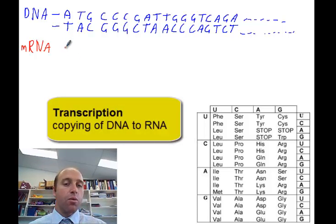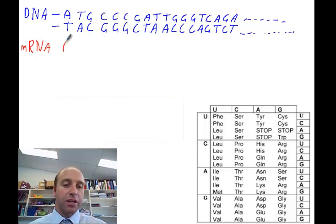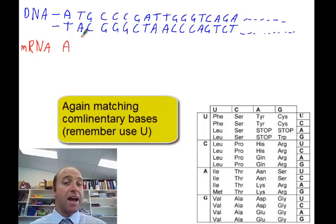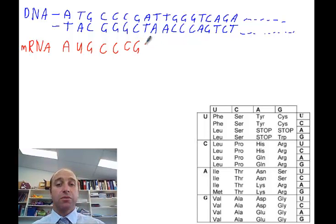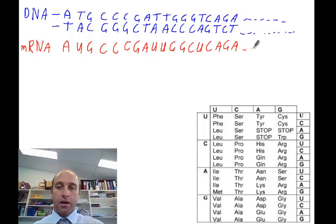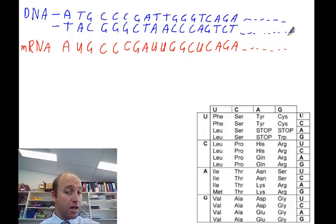First off, T, well that would be complementary to A. The next one, A, normally in DNA it would be complementary to T but we don't have thymine in RNA, so it's complementary to U. C is complementary to G. G is complementary to C. And we go along the line, similar sort of process. And there we have it, that's our strand of messenger RNA, complementary to a section of DNA, U's instead of T's, in the process of transcription.